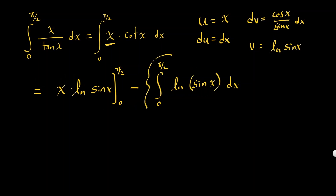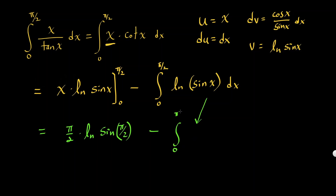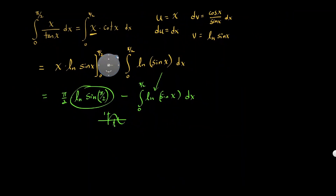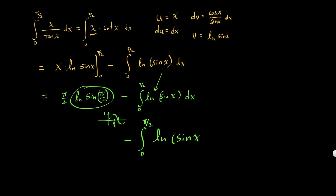This portion — I think I might need to make another video because it's going to take some time. But we can evaluate what's on the left for now. That's going to be pi over 2 times natural log of sine of pi over 2, minus 0. What is sine of pi over 2? It's 1, so ln of 1 is 0. So this whole thing is 0.